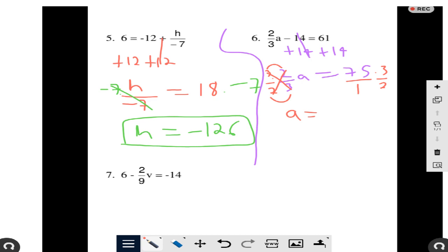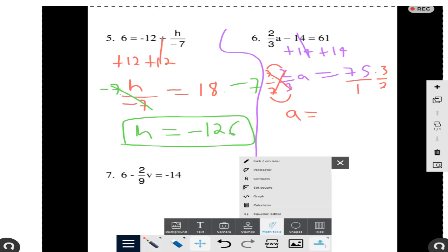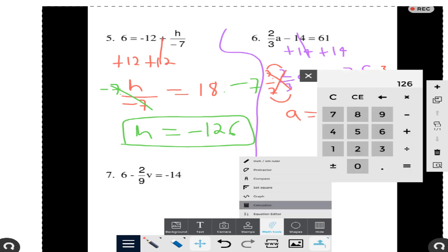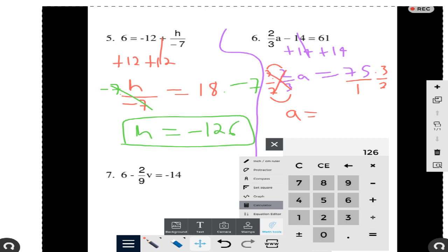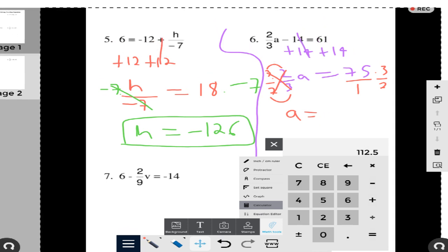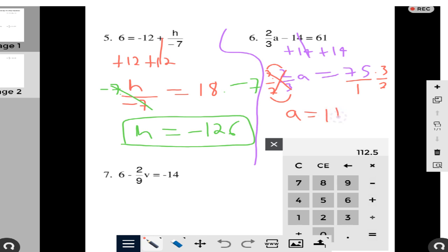And for this, I'm going to use my calculator again, so I'm going to math tools. You can have a calculator in there for yourselves. So this is going to be 75 times 3 equal, and this is going to be divided by 2, since 1 times 2 is 2. So my answer is 112.5 positive.